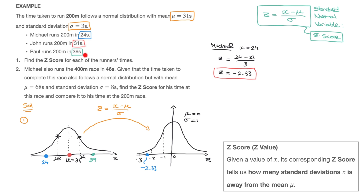Now let's calculate the z-scores for John and Paul. John ran 200 meters in 31 seconds, so x equals 31. Using the formula, z equals 31 minus 31 over 3. Since 31 minus 31 is zero, and zero divided by 3 is zero, John's z-score is equal to zero. That makes sense — since John's time equals the mean, it's at exactly zero standard deviations from the mean, so under the standard normal bell curve, the corresponding z-score is right at the origin.